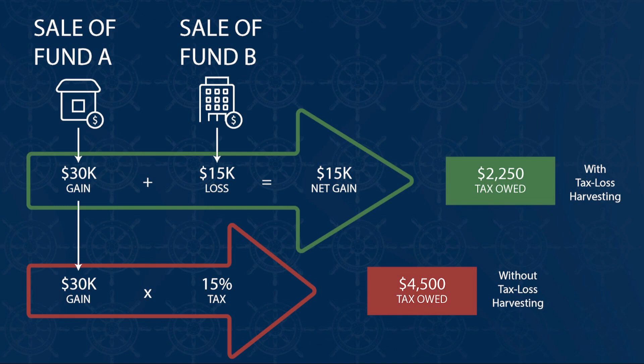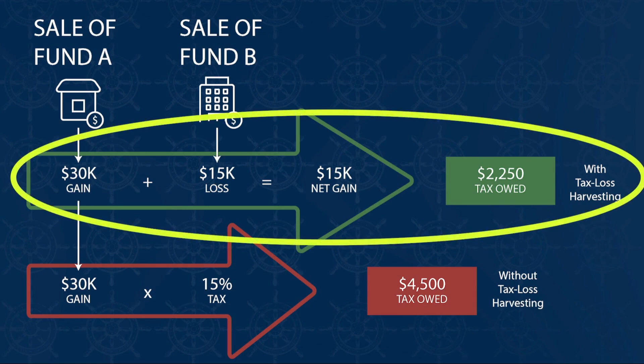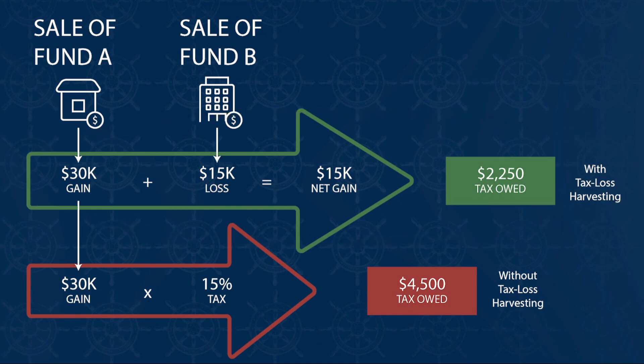Oftentimes, investors only sell the minimum amount needed in their portfolio in order to help them reach their goals. In this example, if the investor were to sell only Fund A that has a $30,000 gain, the full $30,000 would be considered a capital gain and would be taxable. By utilizing tax loss harvesting strategies in this situation, your total capital gains bill for the calendar year would be reduced to a tax bill of $2,250 versus a tax bill of $4,500, thus saving the family potentially $2,250.